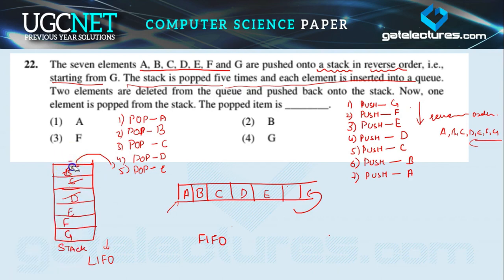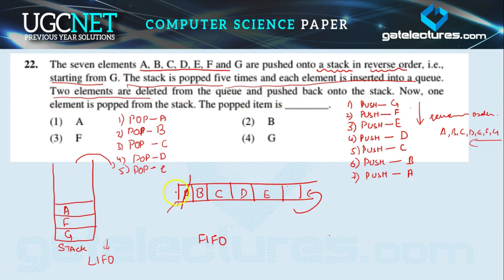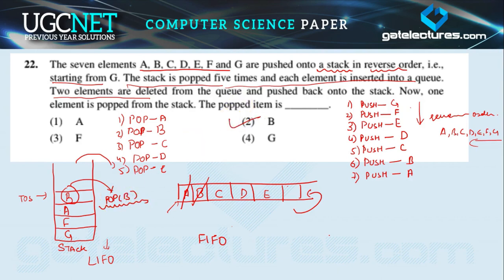Now two elements are deleted from the queue. Queue is FIFO, so a comes out first — a is deleted and pushed back into the stack. Then b is deleted from the queue and pushed back into the stack. Now one element is popped from the stack. The top of the stack is b, so b is popped. The answer is b — option 2.